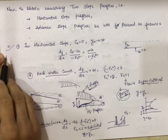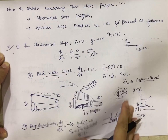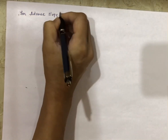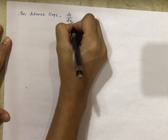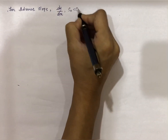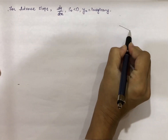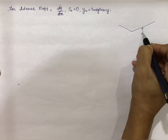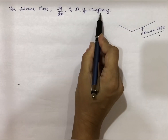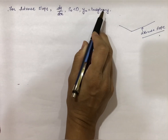So for the horizontal slope, we obtained two profiles: H2 (drop-down curve) and H3 (backwater curve). Now similarly for the adverse slope — when bed slope S0 is less than zero, the normal depth yn becomes imaginary, because the slope is opposite to the natural flow direction. So again we will get two profiles: A2 and A3.